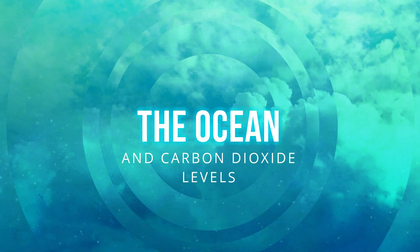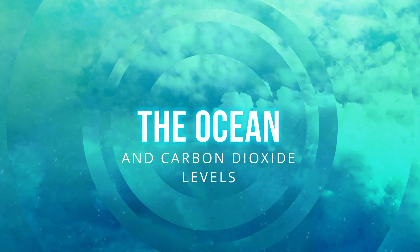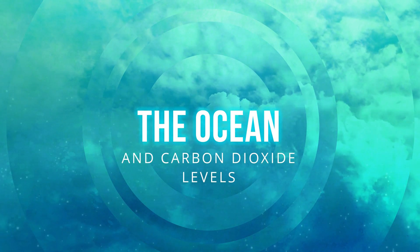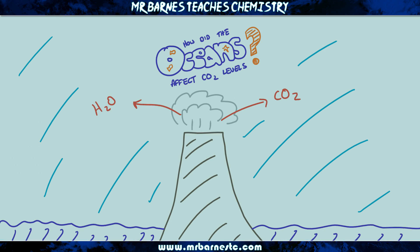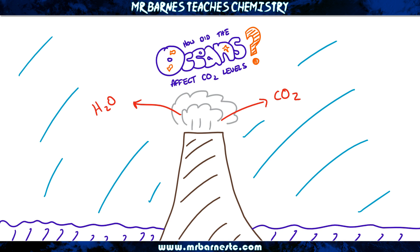Hi guys, welcome to this video looking at how the oceans affected carbon dioxide levels. You should remember from earlier videos that the early atmosphere was formed by volcanoes. The main gases produced by those volcanoes were water vapour, H2O, and carbon dioxide, CO2. And it was when the Earth cooled that the water vapour condensed and formed our oceans.